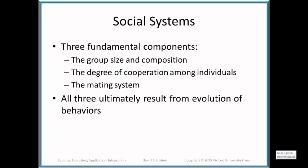The next aspect is the social system — an aggregation of individuals that live together, which may have a structure or hierarchy, such as a pecking order. The classic example is a wolf pack with an alpha male and female couple in charge, though social systems don't always have to be that rigidly controlled. There are three fundamental components: the size and composition of the social group, the degree of cooperation among individuals, and the specific mating system. All three result from the evolution of behaviors.